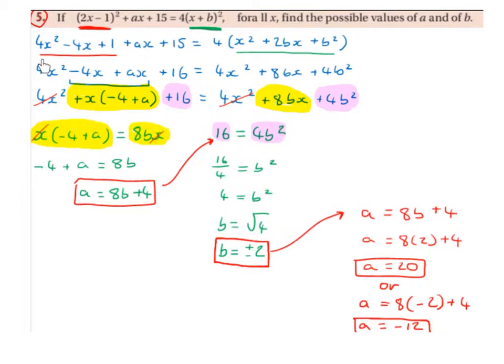So next we're going to bring down the 4x squared, the minus 4x, the 1 and the 15 will give us 16, and we bring down the plus ax. Then 4 by x squared is 4x squared, 4 by 2bx is plus 8bx, 4 by b squared is 4b squared.